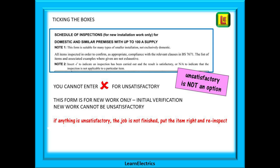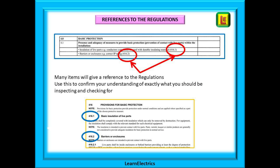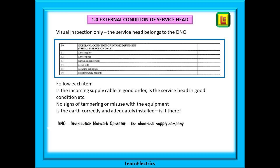Some of the items will have references to the main part of the wiring regulations book, such as 416.1 and 416.2 shown here. It is telling you where to look to find more information about what you should be checking. Use this information to help you — that is what it is there for. We can begin with section one: the intake position of the supply.